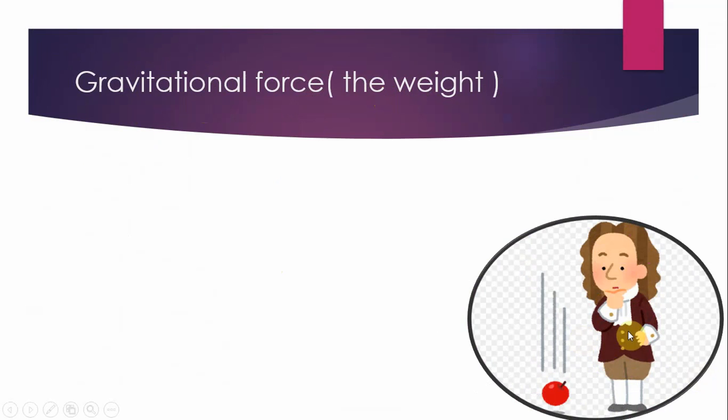Isaac Newton was the first one who discovered the Earth's gravitational force when he was standing under a tree and he found an apple falling down to the ground. Then he proved that all masses are attracted toward the Earth's center.